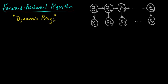Dynamic programming is really a broad class of algorithms, and here we're going to look at the forward-backward algorithm as one particular case. If you haven't seen dynamic programming before, this is really a perfect example to cut your teeth on.